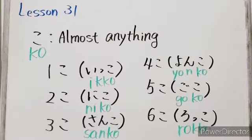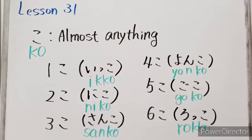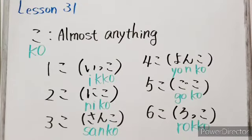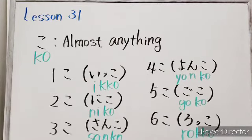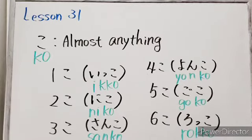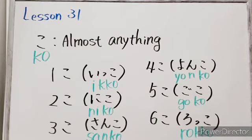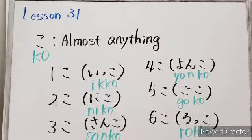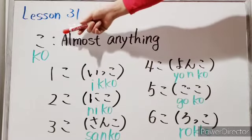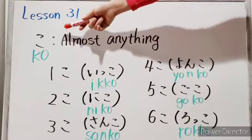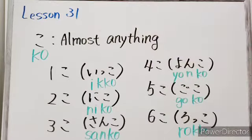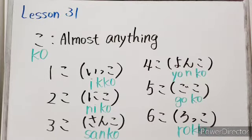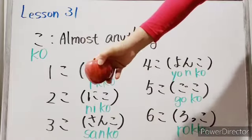Then, let's learn how to count objects. In Japan, there are many different ways to count, based on the object's shape or classification. The most common method is ko. You can use this to count almost anything, like apples.